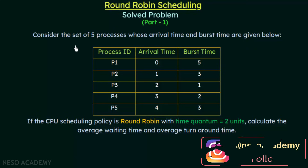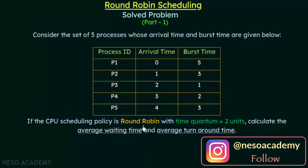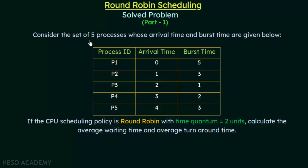The problem says: consider a set of 5 processes whose arrival time and burst time are given below. If the CPU scheduling policy is round robin with time quantum equal to 2 units, calculate the average waiting time and average turnaround time.